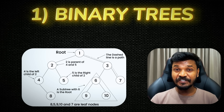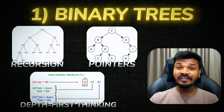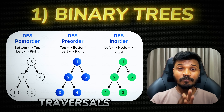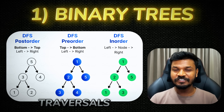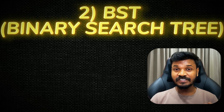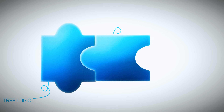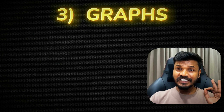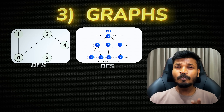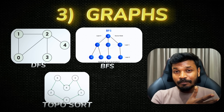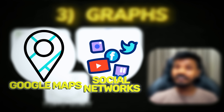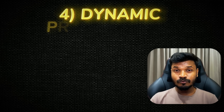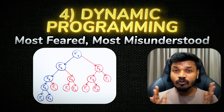Then: Binary Trees — this is where everything starts to click. Recursion, pointers, depth-first thinking, traversals like in-order, pre-order, post-order become second nature. Next: BST — binary search tree — take tree logic plus sorting plus search and mix it; very common in interviews. Then: Graphs — the final boss of DSA. DFS, BFS, topo sort — this is where your earlier learning actually pays off. Used in Google Maps, social networks and recommendations. And Dynamic Programming — most feared and most misunderstood. Start with recursion, add memoization, go to 1D, then 2D, then patterns. Don't jump directly into coin change or knapsack.